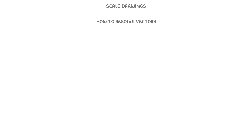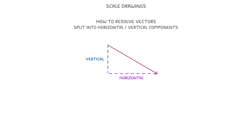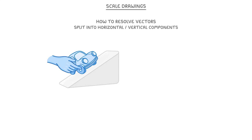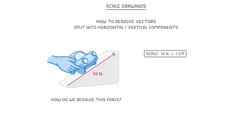The last thing we need to look at is how to resolve vectors. This is basically the opposite of what we've been doing so far in this video. When you resolve a vector, the aim is to split it up into its horizontal and vertical components. And to do this in practice, we need to use a scale drawing again. Let's imagine that we have a toy car, and that we're exerting a force of 50 newtons on it to push it up the ramp. If we make our scale 10 newtons per centimetre, then we could represent the 50 newton force with a 5 centimetre line at the same angle as the ramp.